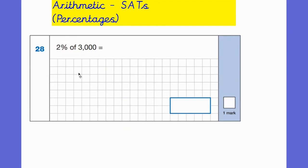So the next question we're going to look at is this one, 28: 2% of 3,000. Now once again, we've got to find 2% of this number. To find 2% of a number, you divide the number by 100. So I am going to show you an alternative way to the one that I just showed you.